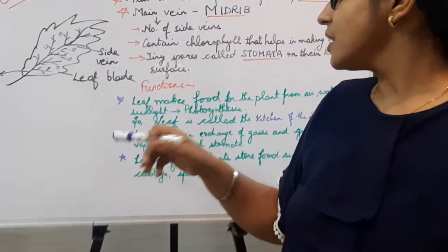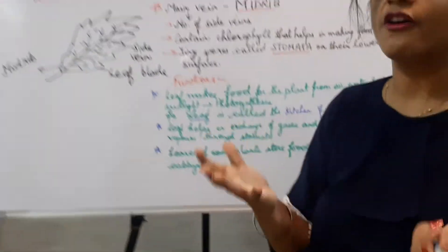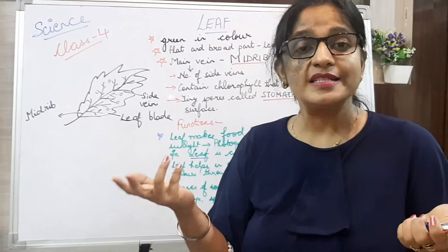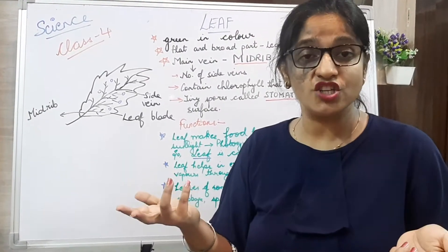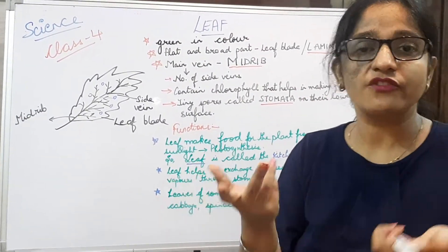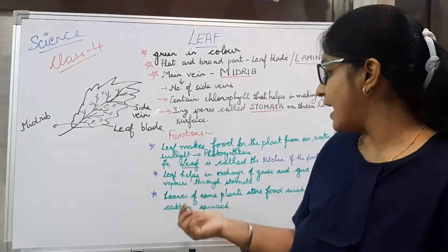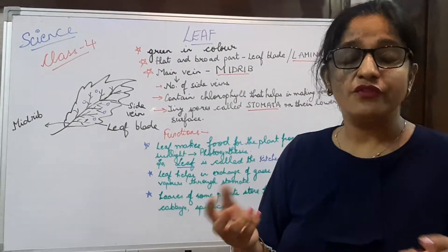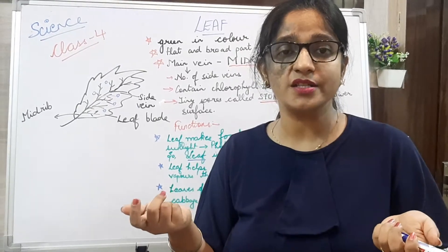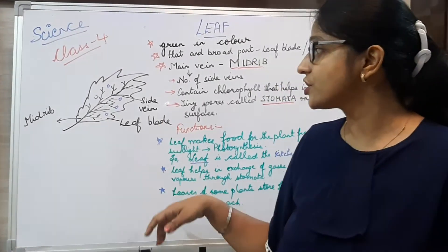The last function of leaf is that leaves of some plants contain food — such as cabbage and spinach. We eat the leaves of cabbage and spinach; we can eat them raw directly as well.